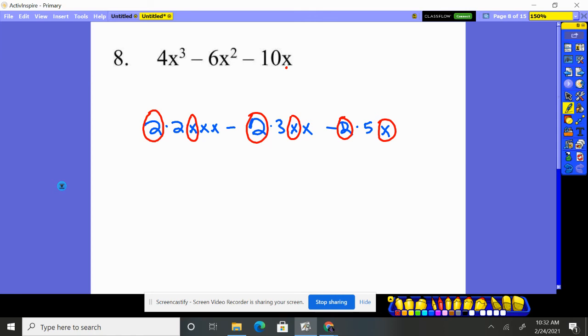So what did they all have? They all had a two and an X. And what was then left behind? Well, here was two X squared minus three X minus five. So two X is what was the greatest common factor that could be factored out.